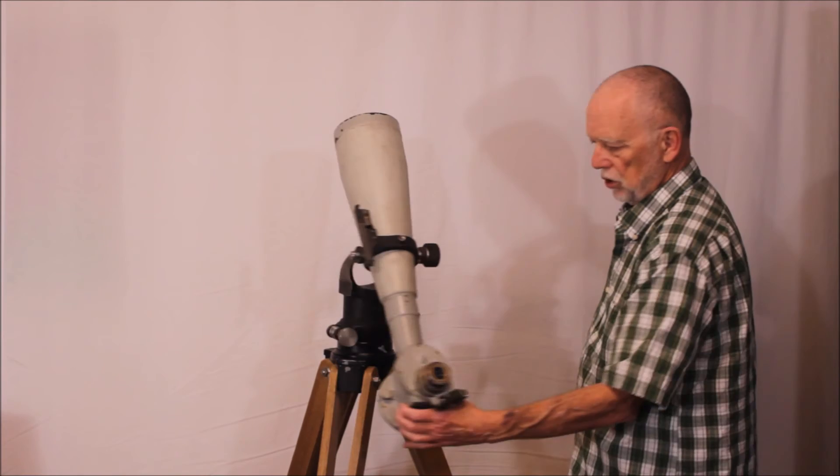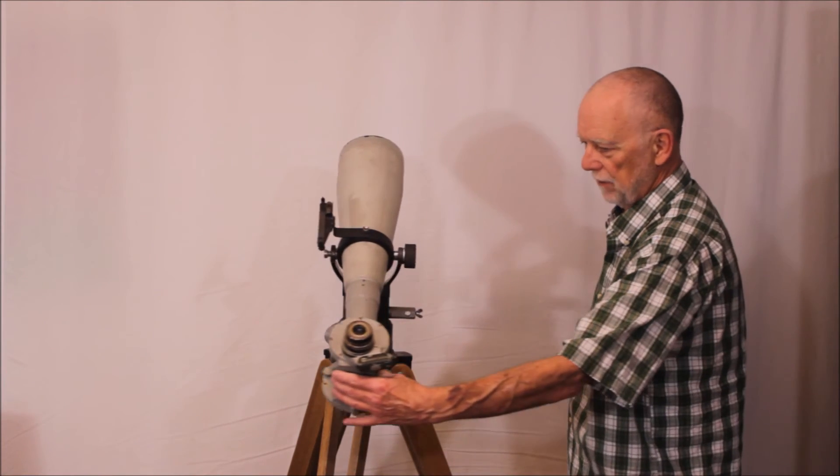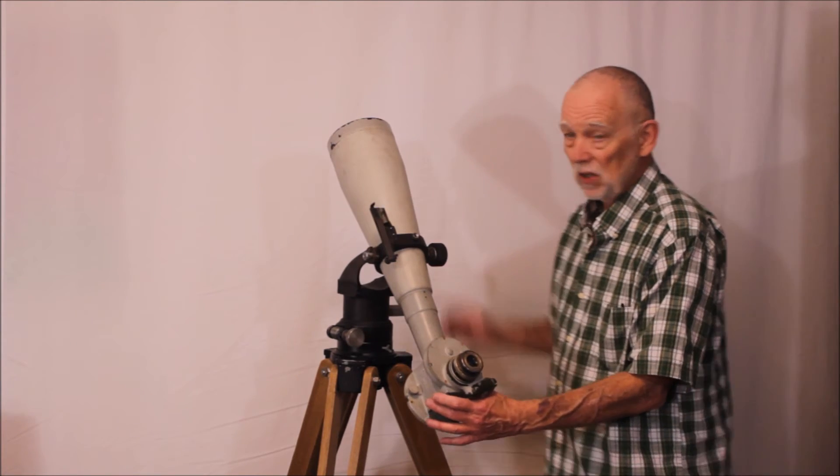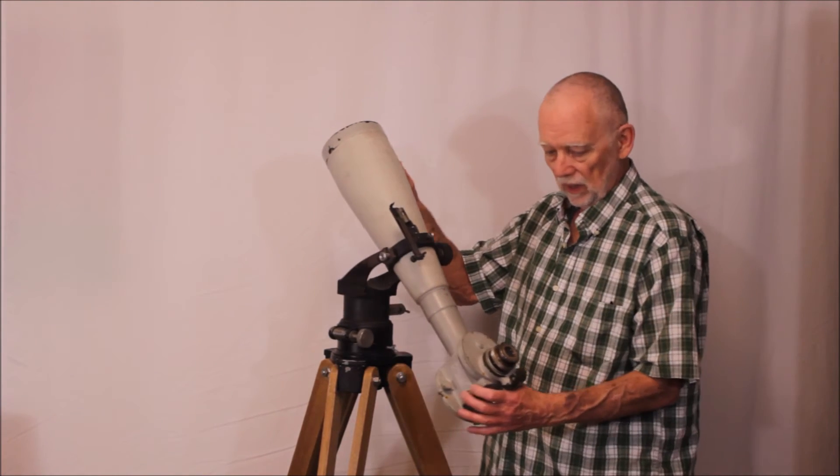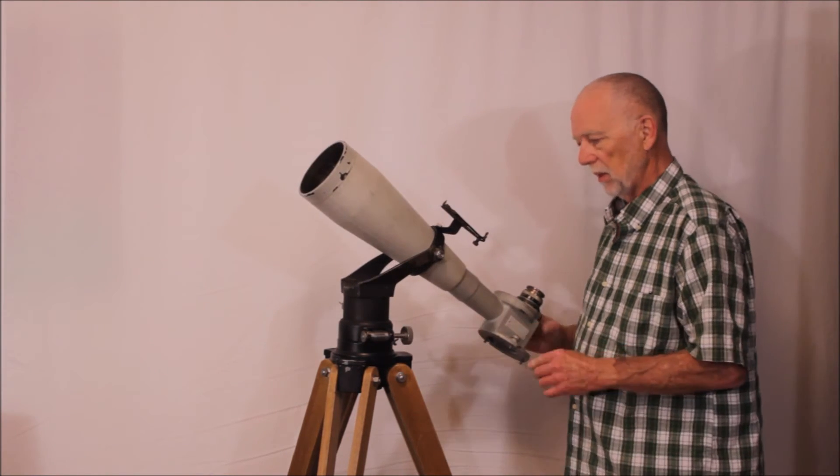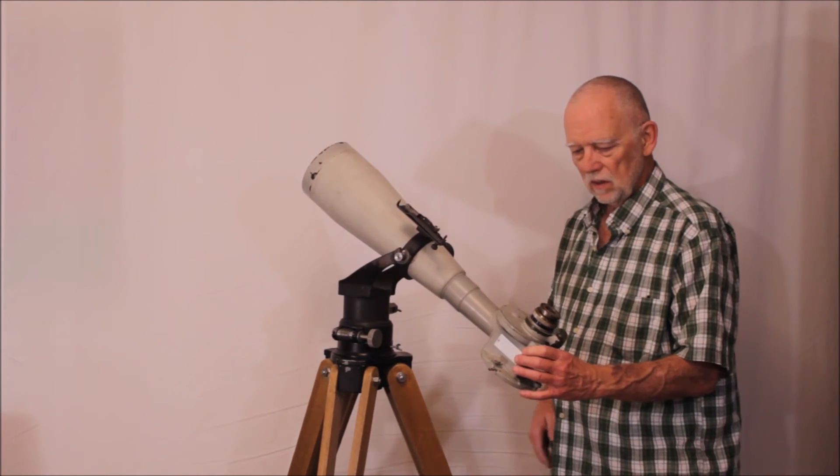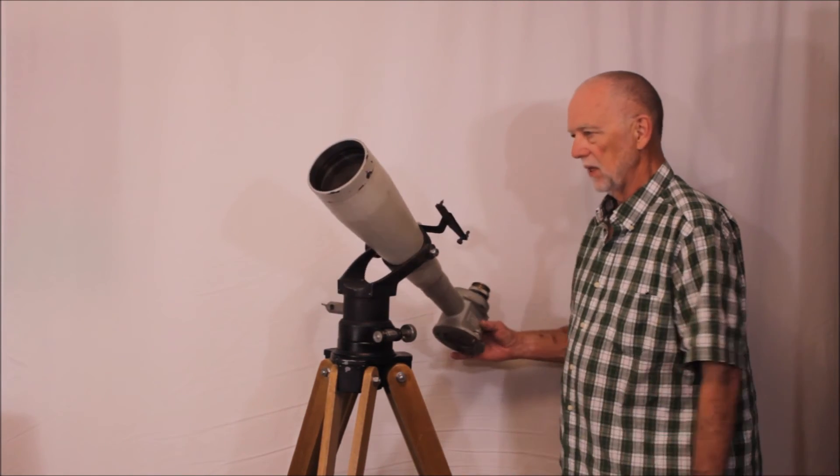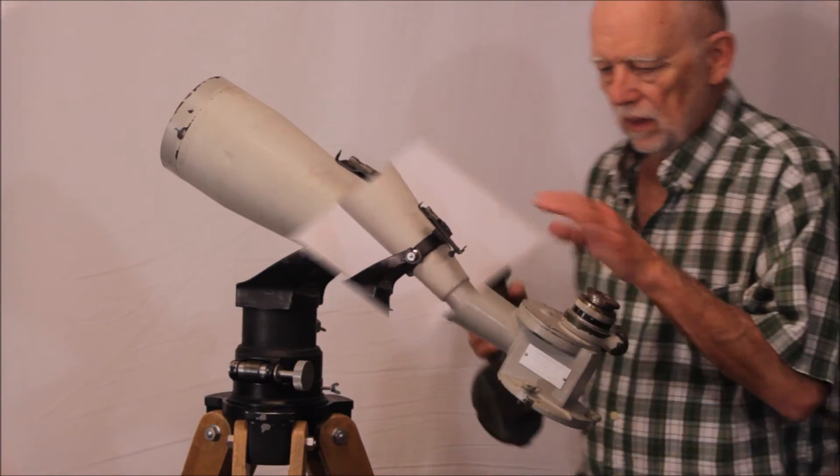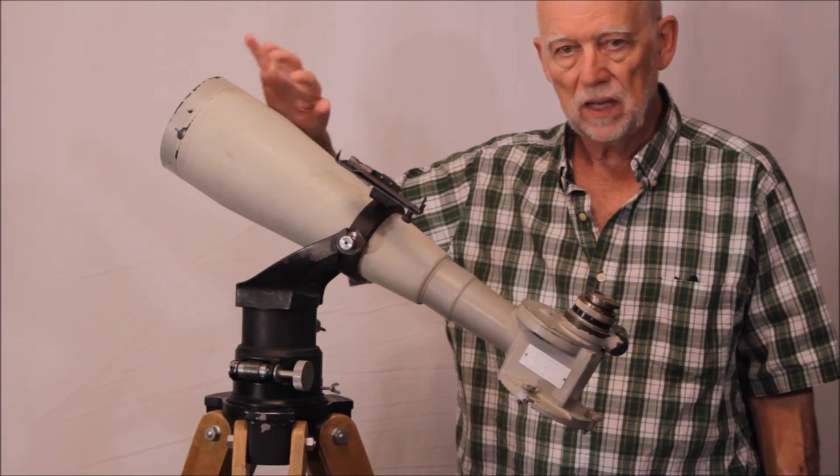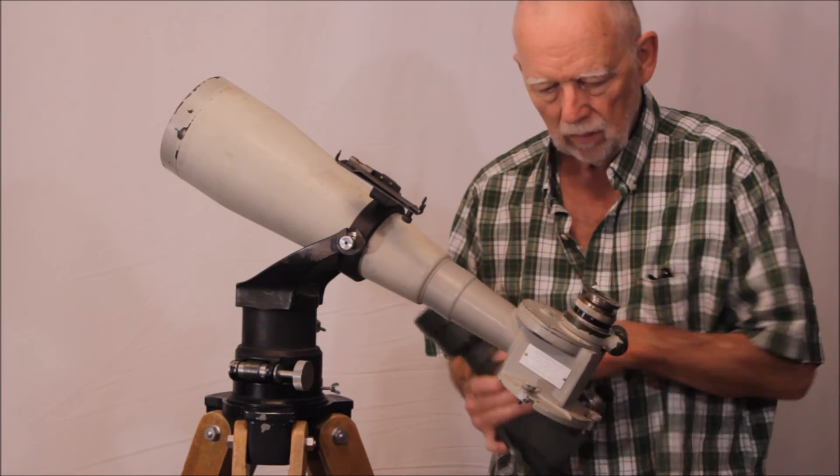The optics are not great on this telescope, but by the same token, for comet spotting or maybe spotting a faint satellite in the sky, this would probably be just about the right kind of thing to have. This is made from an M17 with a 5 inch lens pasted on the front, basically.